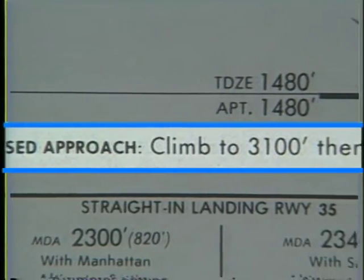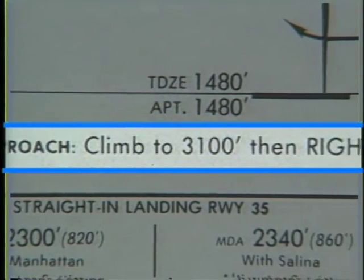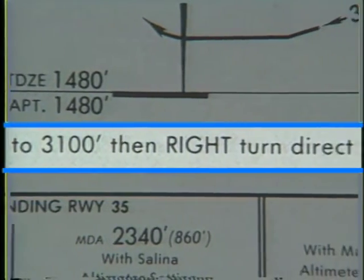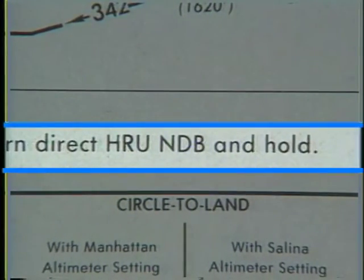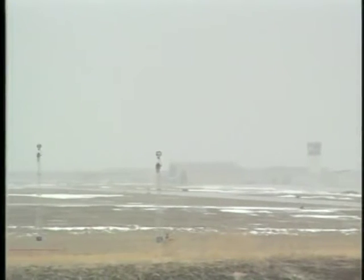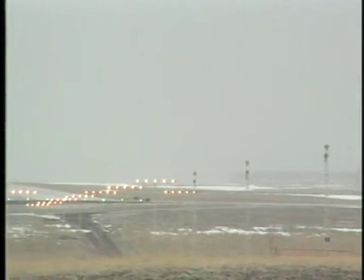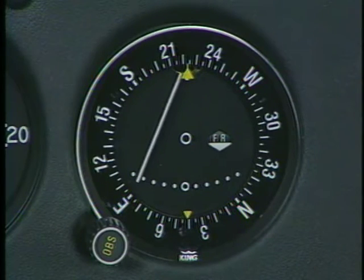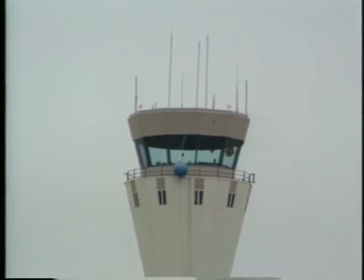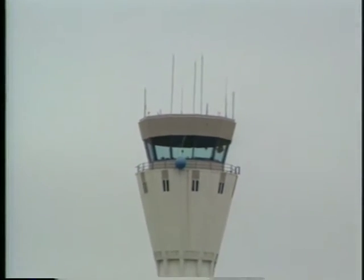Another unique feature of every instrument approach is the missed approach procedure. It is carefully designed to provide adequate obstacle clearance throughout the segment. Although limited visibility is the primary cause of most missed approaches, you can initiate the procedure for a number of reasons, such as not being properly aligned with the approach course or receiving specific instructions from ATC.